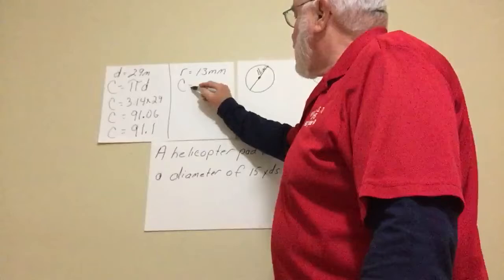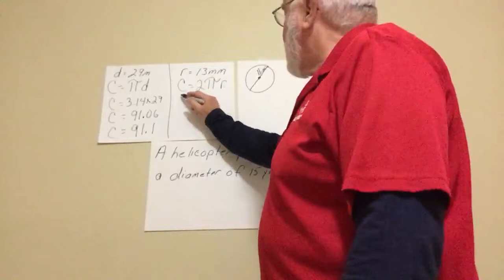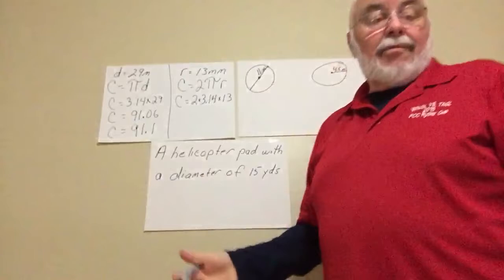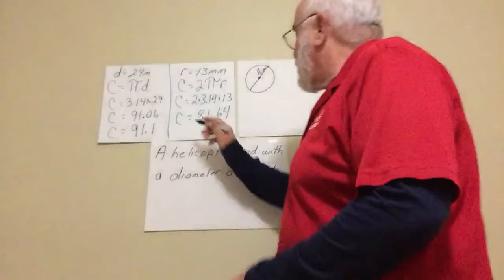So the next one, they give us the radius. So then we're just going to use circumference equals 2 times pi times r. Now, remember, you can multiply them because of the commutative property. We can move them around any way you want. So they give us 13. So circumference equals 2 times 3.14 times 13. When you put all these together, it becomes circumference equals 81.64.